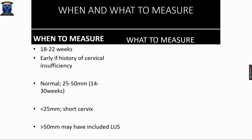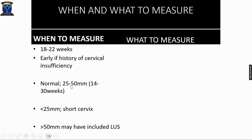The cervix should be assessed between 18 to 22 weeks, when the anomaly scan is commonly done, or earlier if the patient has a history of cervical insufficiency. Normal cervical length is between 25 to 50 millimeters between 14 and 30 weeks of gestation. Less than 25 millimeters is considered a short cervix, while greater than 50 millimeters may have included the lower segment — which is why assessment of the cervical mucosa is extremely important.